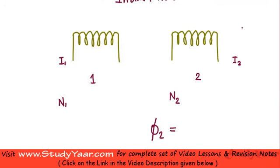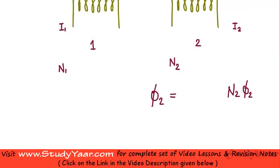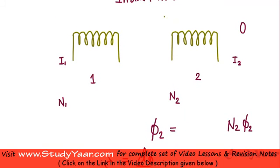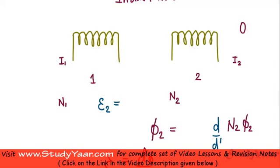Let's say phi2 is the magnetic flux due to a single loop. In this coil you have N2 number of loops, therefore your net flux is simply N2 into phi2. Your net flux due to the magnetic field produced by this solenoid is N2 into phi2. And EMF is simply d(flux)/dt. Therefore, your EMF generated on this coil, E2, is simply N2 into d(phi2)/dt.